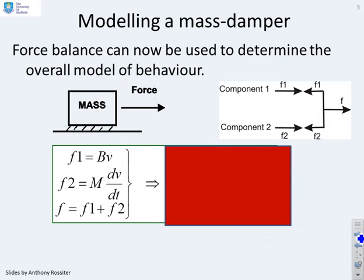I can write down equations for F1, the friction component, and F2, the acceleration component. F1 equals some constant times the velocity. A simple assumption is the friction increases linearly with velocity. Anyone who's been on a bicycle will recognise that. The faster you go, the more the wind resistance. And the acceleration force, standard Newton's law: F2 equals m dV/dt.